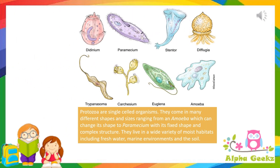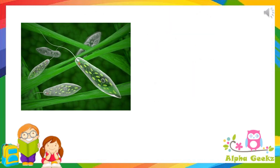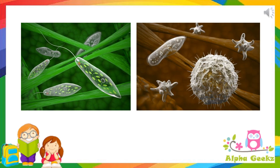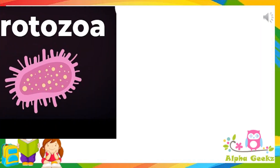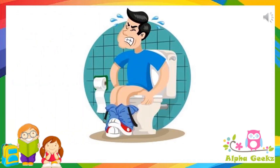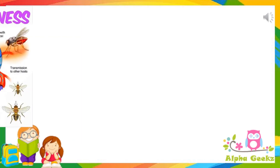Protozoa are single cell organisms. They come in many different shapes and sizes, ranging from an amoeba which can change shape to paramecium with its thick shape and complex structure. Some are more oval and others have hair-like structures to help them move around. They live in a wide variety of moist habitats including fresh water, marine environments and the soil. Protozoa may live inside bodies of plants and animals. Protozoa cause diseases like dysentery, malaria, sleeping sickness, etc.